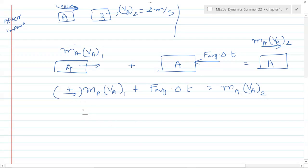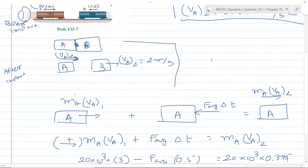This is 20 times 10^3 multiplied by 3. Now this force is in the negative direction, so we write that as minus F_avg times 0.5. This number is given—the average impact happens in 0.5 seconds. And this is v_A2, which we just calculated in the previous step, 0.375.